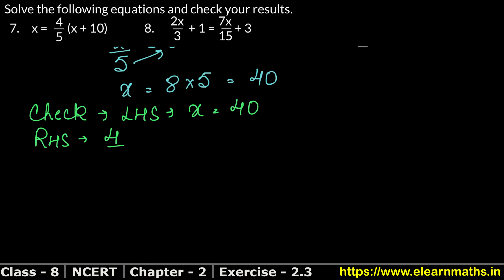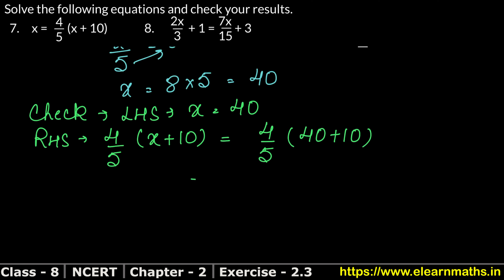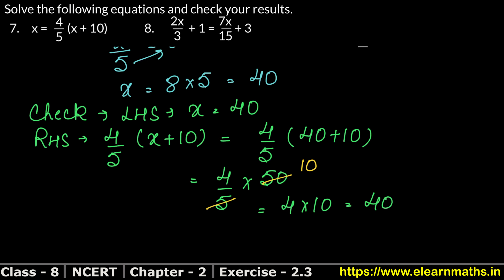For the right-hand side, it was 4 upon 5 into x plus 10. Substituting x = 40: 4 upon 5 into 40 plus 10, which is 4 upon 5 into 50. 5 tens are 50, so this gives 4 into 10 equals 40. Our left-hand side is 40 and right-hand side is 40, so the value of x equals 40 is absolutely correct — LHS equals RHS.